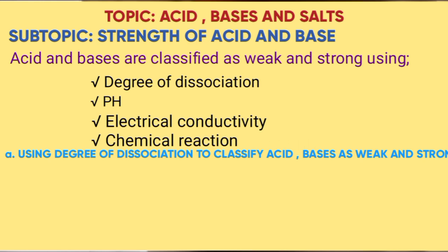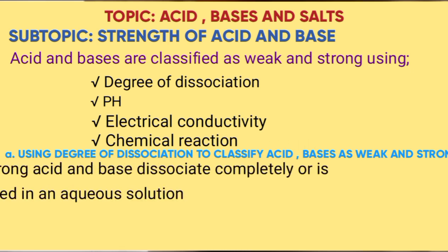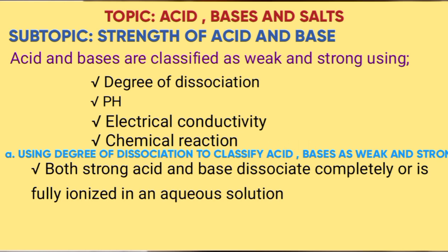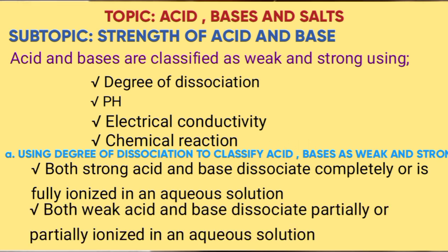Using degree of dissociation to classify acid and base as weak and strong. Both strong acid and base dissociate completely, or are fully ionized, in an aqueous solution. Both weak acid and base dissociate partially, or are partially ionized, in an aqueous solution.